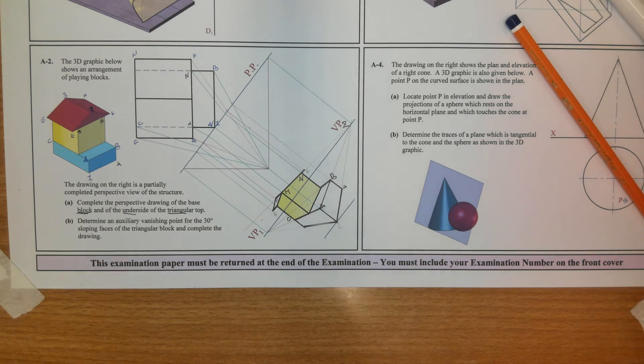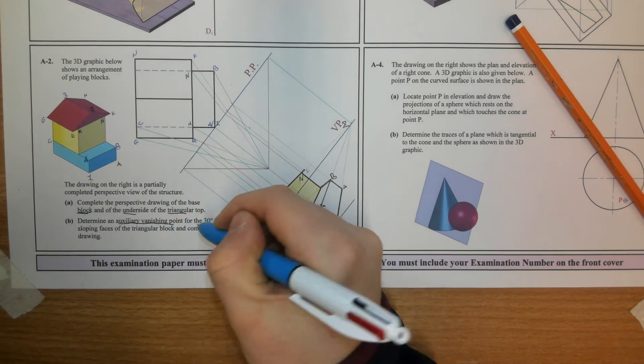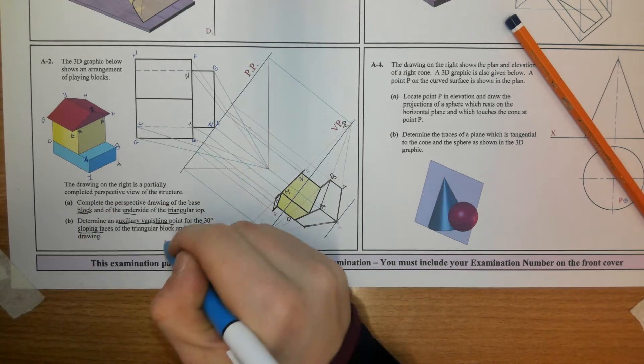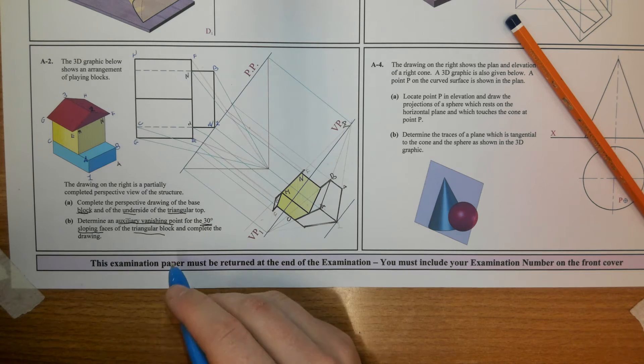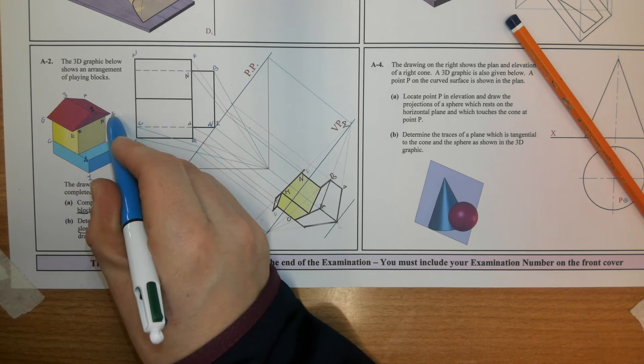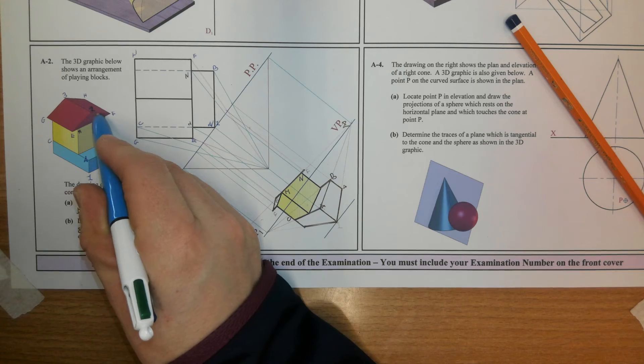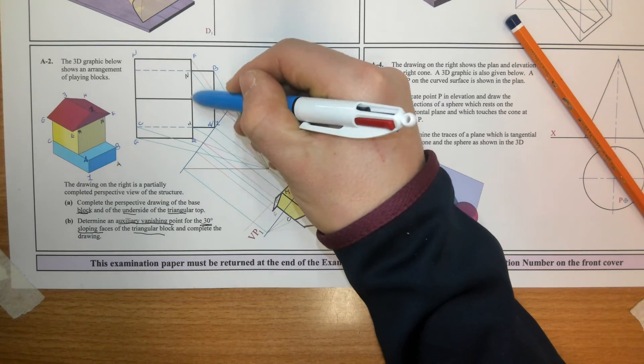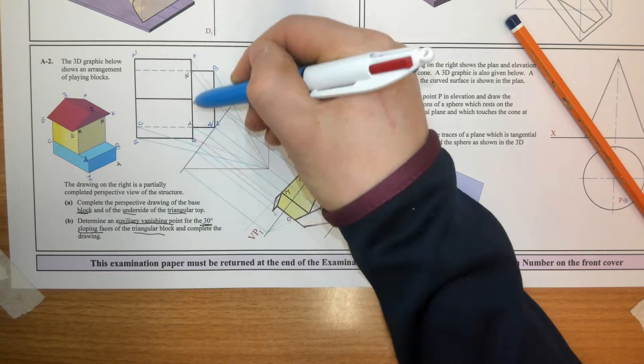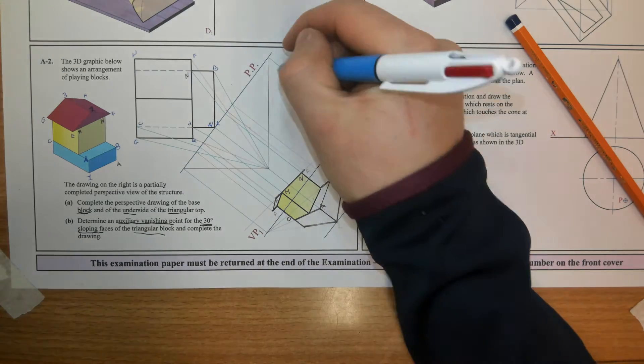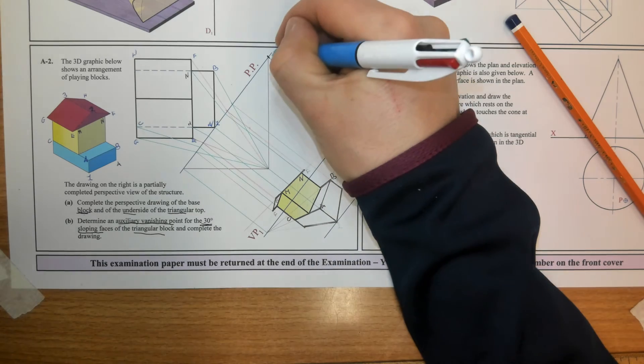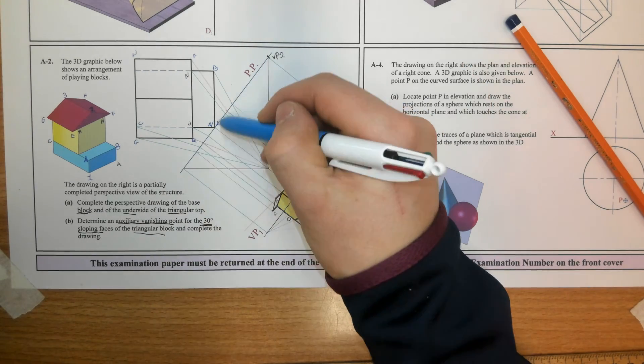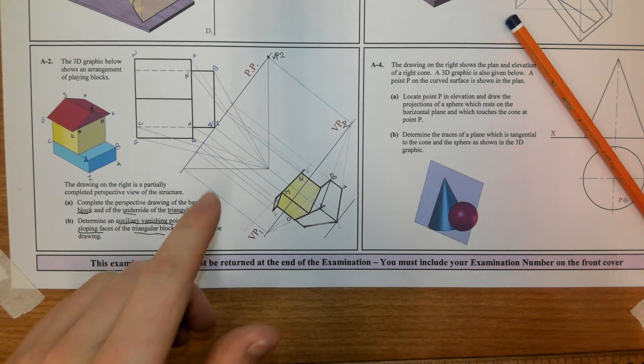So part B. We have to determine the auxiliary vanishing points for the 30 degrees sloping faces of the triangular block and complete the drawing. So here's the sloping lines in the 3D graphic. Now what's very important is you understand where those sloping lines are. So here's the sloping lines in plan. So their auxiliary vanishing point will be above VP2 on the picture plane. So that's very critical to know. A lot of students mix up and do construction on the wrong vanishing point.